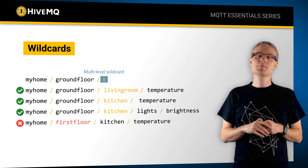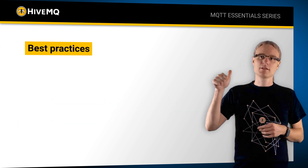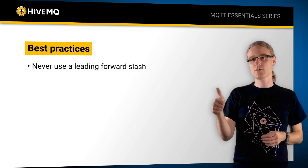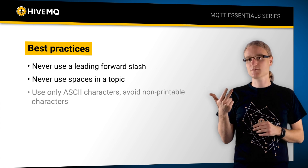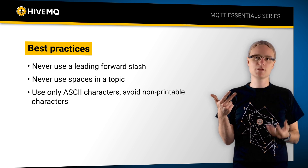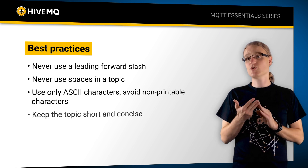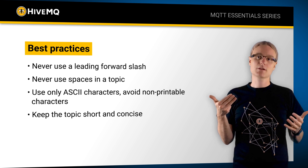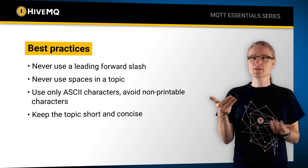Let me share a few best practices we have learned over the years here at HiveMQ. Number one: never use a leading slash — while Linux file systems do this, don't do it with MQTT. Don't use spaces, and use ASCII characters, because using weird characters is super hard to debug. Also keep topics short and concise, because topics are carried with every subscribed and published packet, so a long topic wastes bandwidth.